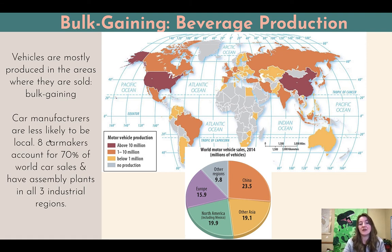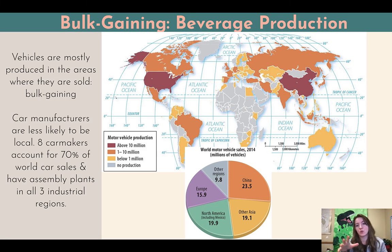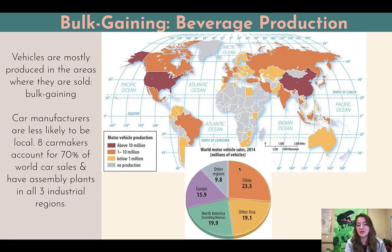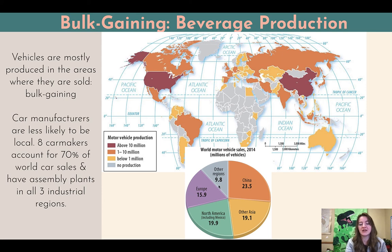Car manufacturers are less likely to be purely local than beverage production, but eight car makers account for 70% of car sales worldwide, and they have assembly plants in all three major industrial regions. Looking at world motor vehicle sales in 2014: China had 23.5 million vehicles sold, North America including Mexico had 19.9 million, the rest of Asia had 19.1 million, Europe had 15.9 million, and the rest of the world had 9.8 million combined. Again, consider where they're produced versus where they're sold.